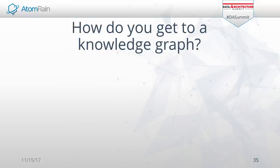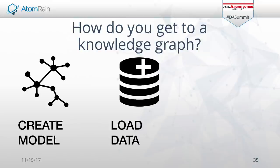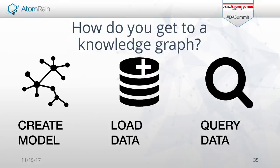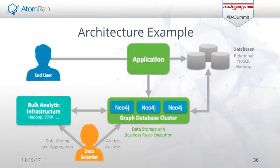So how do you get to a knowledge graph? You create the model, load the data, and query the data. Creating the model is something you have to do — you sit down and talk about the business concepts, decide how they're connected. You probably have many different models across the organization for the same types of things. A lot of the initial process is deciding which concepts are important, which ones to keep, and what will be the master model to transform your data into going forward. And it's okay if it's iterative — you don't have to get the model completely right the first time.